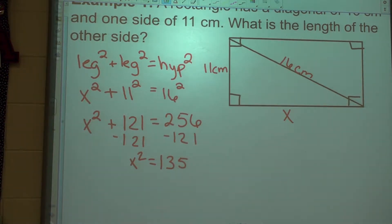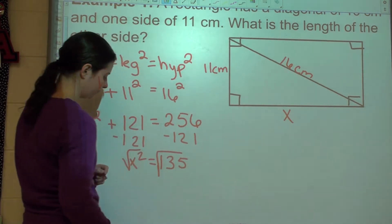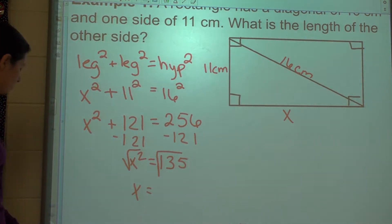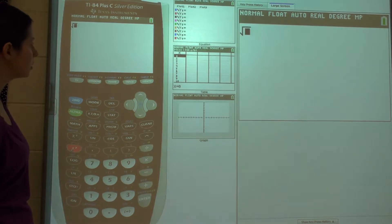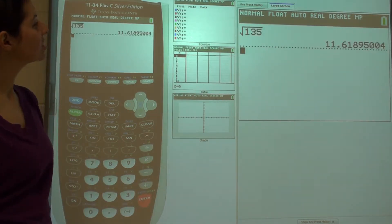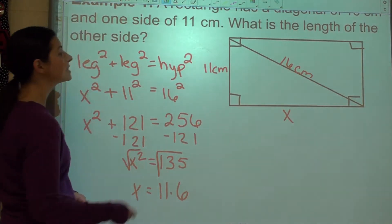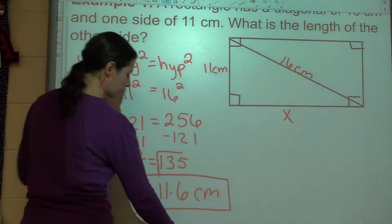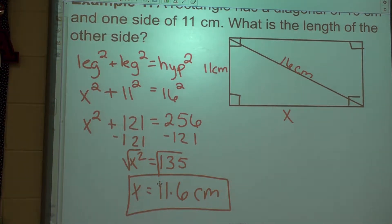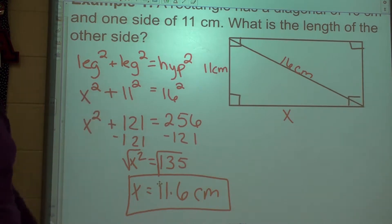When you have X to the second power, in order to get it by itself you need to take the square root — that's how you undo a square. So X equals the square root of 135, which gives me 11.6 centimeters. We always want to remember our units. Now if we had been given both legs instead of a leg and hypotenuse, we would have added 16 squared plus 11 squared together and then taken the square root of that side — that's how it would have changed.